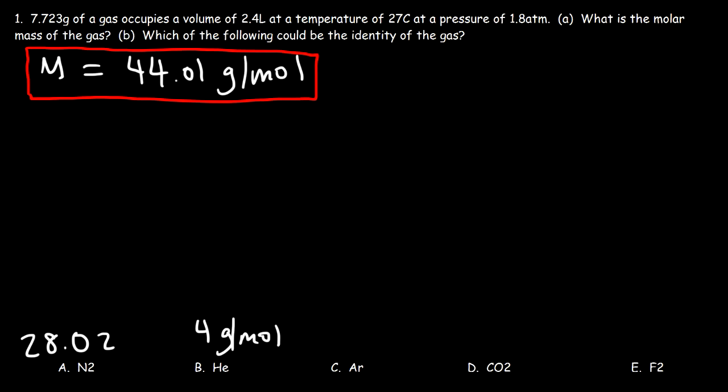Argon, if you look at the periodic table, is like 39.95, so we're going to say about 40. F2 is 19 times 2, that's 38.